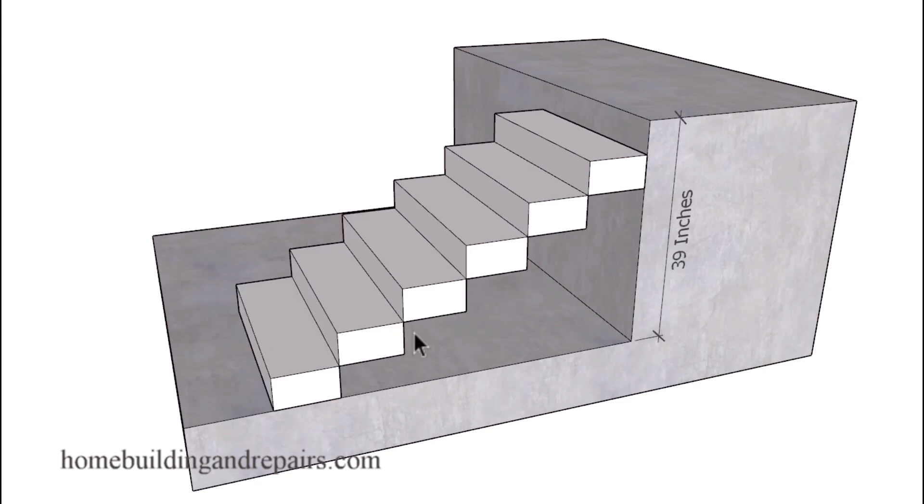But let's not stop there. Let's go ahead and divide it by 7. That's going to provide us with a 5.57 inch riser height, or just a little over 5.5 inches. And another stairway that we can build.